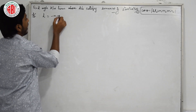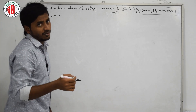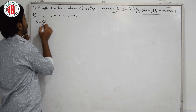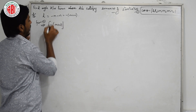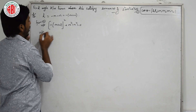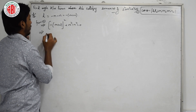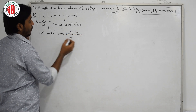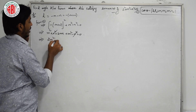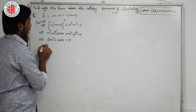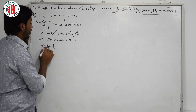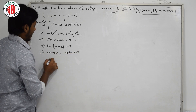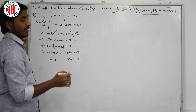From equation 1 we get L equals minus M minus N. We substitute into the second equation: L squared plus M squared minus N squared equals 0. Substituting, minus of (M plus N) whole squared plus M squared minus N squared equals 0. Expanding: M squared plus N squared plus 2MN plus M squared minus N squared equals 0. The N squared terms cancel, giving 2M squared plus 2MN equals 0.